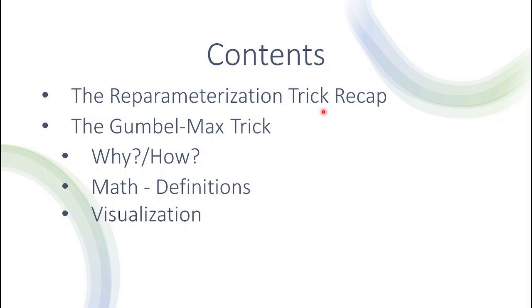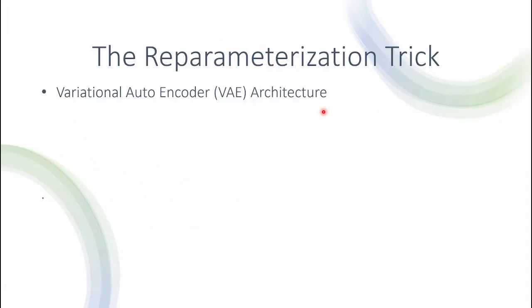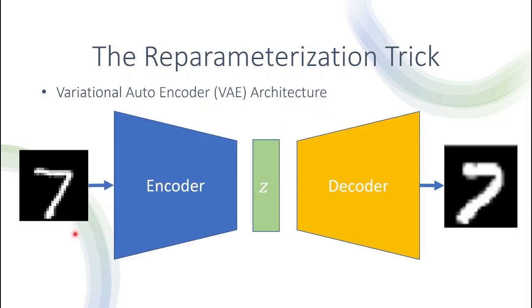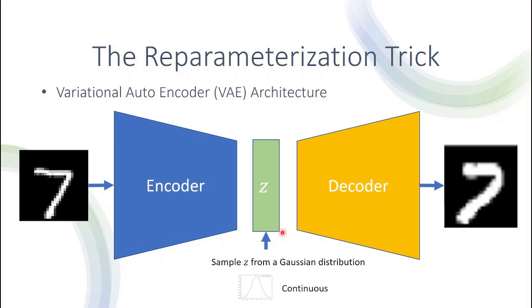Let's start with the recap of the reparameterization trick. We talked about a specific model called a variational autoencoder. This model receives some input, say an image, then the encoder part encodes the input to a lower dimension, usually denoted as z. We want to reconstruct another image from the same distribution, so we sample z from a Gaussian distribution conditioned on the input. One key difference between the two tricks is that here the Gaussian distribution is continuous, whereas for the Gumbel-Max trick we want to sample from a discrete distribution.